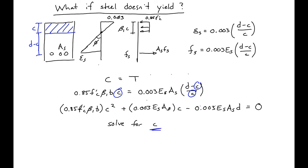Once we have the value of C, we can use it in all of our expressions. Our nominal moment Mn is then the stress in our steel times the area of our steel times (d minus β₁·C over 2). This is how we find C and how we find the nominal moment when our steel doesn't yield.